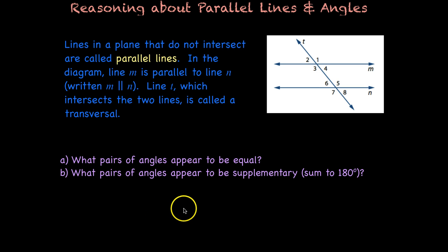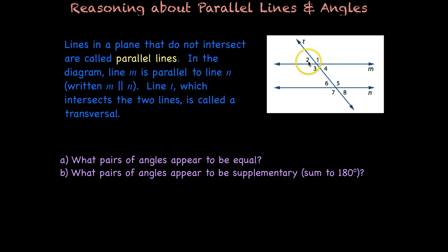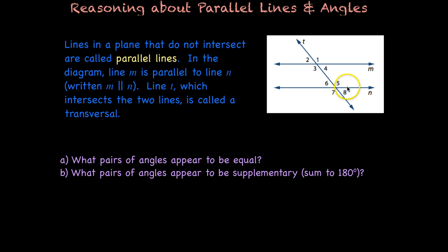Some of the things you already know from the last lesson. For example, you know that one and three are equal because those are vertical angles. You also know that one and two are supplementary because they form a linear pair, so you can figure that out within the four angles between intersecting lines. But what about between these four angles? Which angles here — one, two, three, four — appear to be equal to the angles down here — five, six, seven, eight?